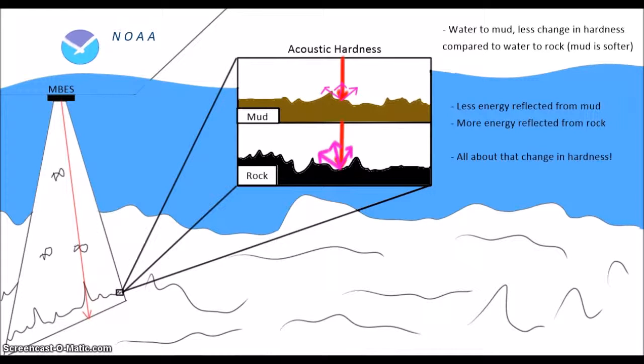This means that the backscatter strength can provide information about the properties of an object, whether it's a school of fish, seeps of gas coming from the seafloor, or the seafloor itself.